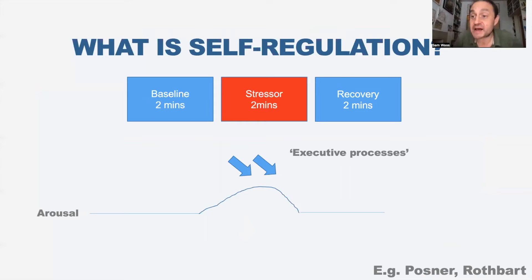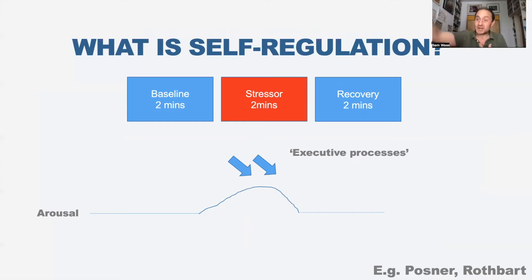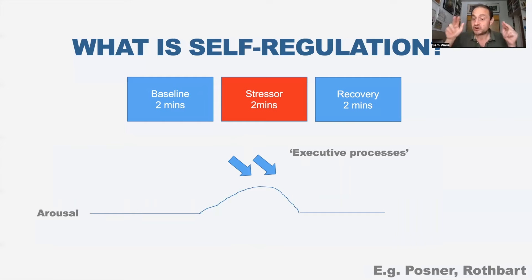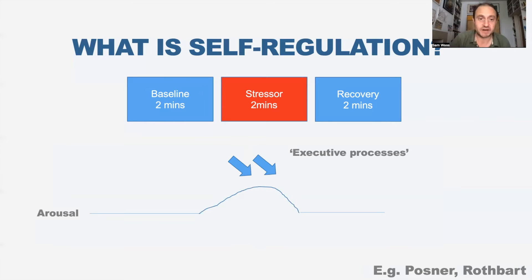A basic model for how this works is: I have my own levels of autonomic arousal. A stressor comes from outside that increases my arousal, and I use my executive processes - according to people like Posner and Rothbart - to down-regulate my arousal and recover.